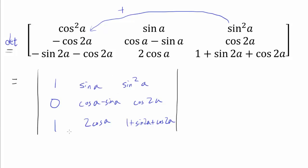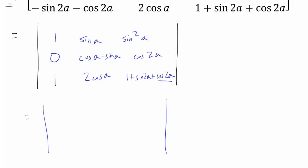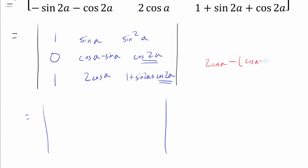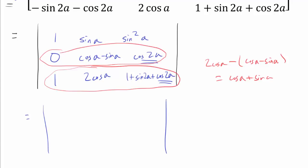From here, there are many ways to approach this, but I'll show you one I find particularly delightful. We notice we have cos(2a) appearing in two rows. When we do 2cos(a) minus cos(a) minus sin(a), we get cos(a) + sin(a), which is symmetric with other expressions already present. So let's subtract the second row from the third row — the cos(2a) terms cancel — and we get 1, cos(a) + sin(a), and 1 + sin(2a) in the modified row.